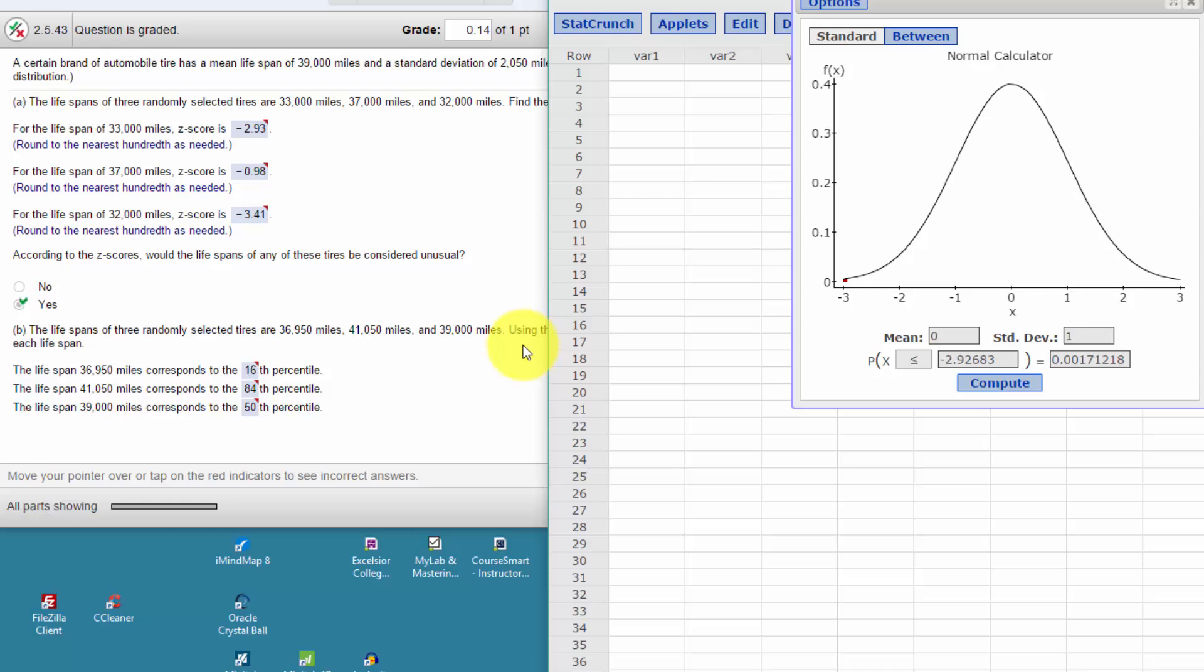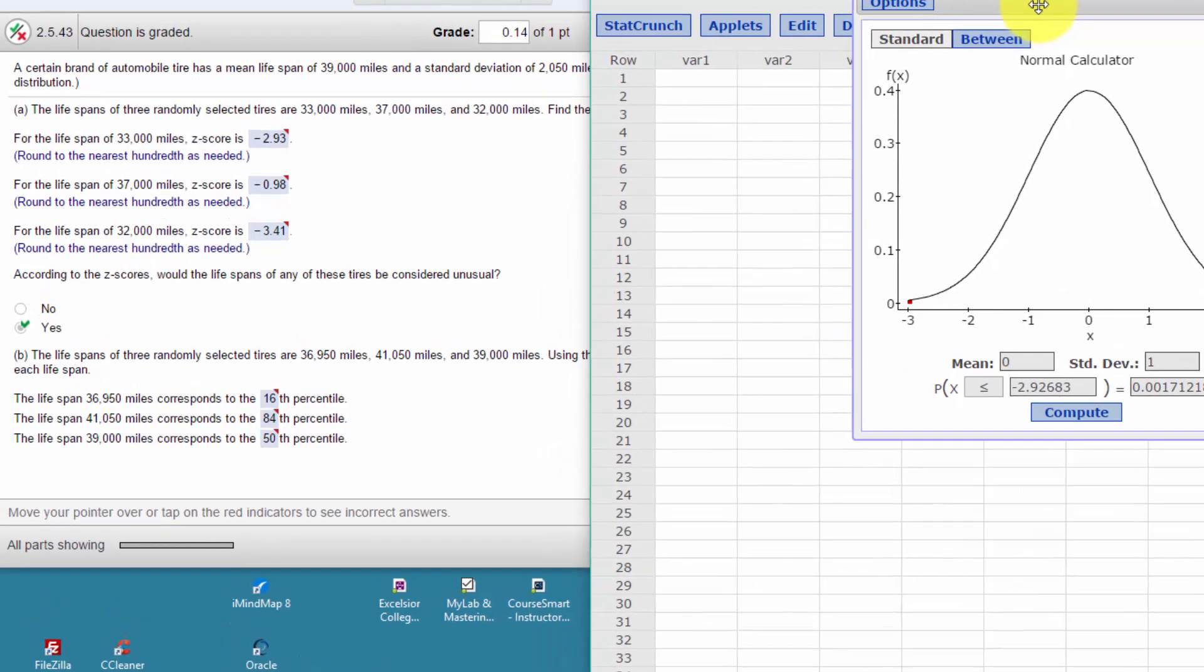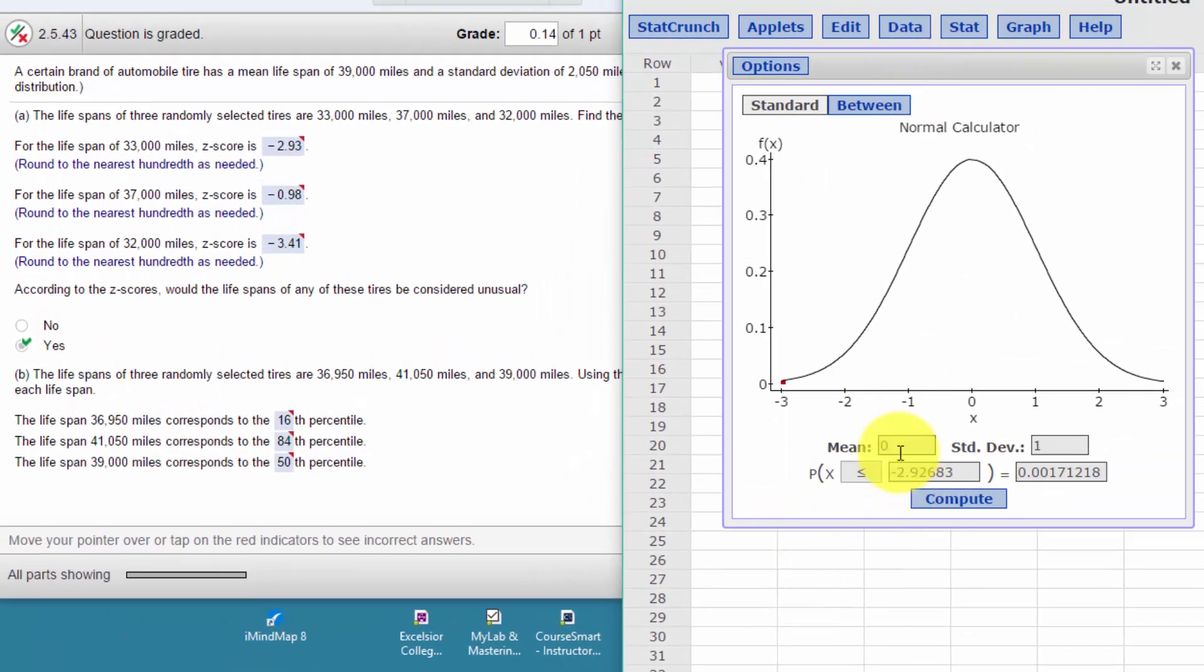Now it says use the empirical rule to get these lifespans, which you can do, but you can also use this normal probability calculator to come up with those percentiles.